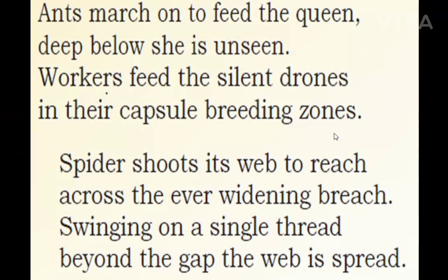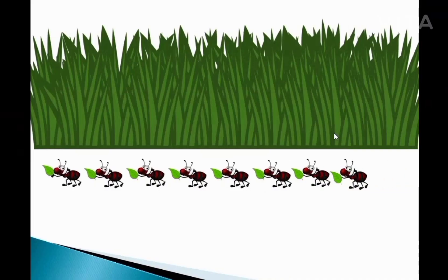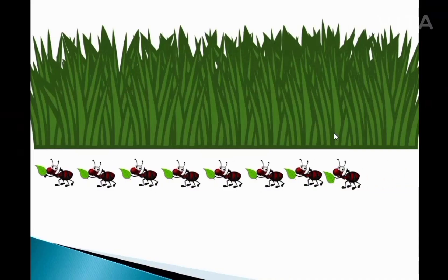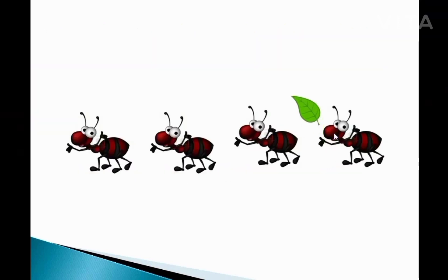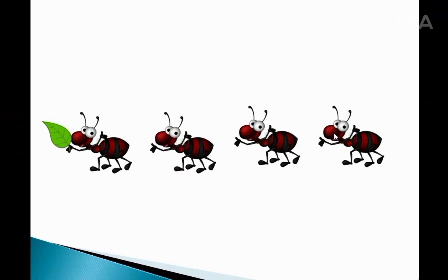Now you have seen the ants. How do they move? They move in a straight line without making any sound. You will see them holding food and passing it along to the next one in line — as though they all belong to one single brain. All the ants together have one thought, so they help each other.